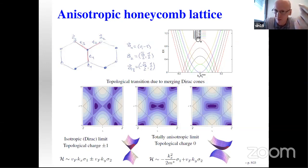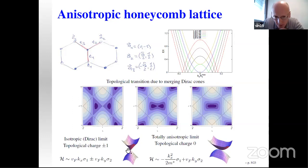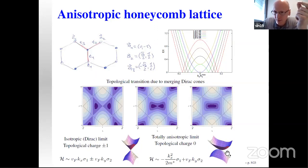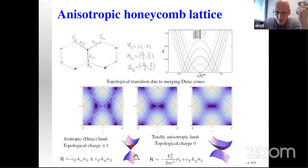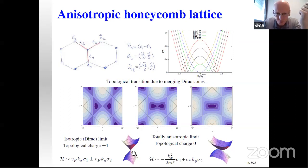Precisely when the anisotropy reaches t1 = 2t, both Dirac points merge. What appears then is a semi-Dirac spectrum: it still has a nodal point where two bands touch, but it is highly anisotropic — parabolic in one direction and linear in the other. Moreover, a Dirac point always carries a topological (chiral) charge, which is completely gone when both neighboring Dirac points fuse and merge with each other.